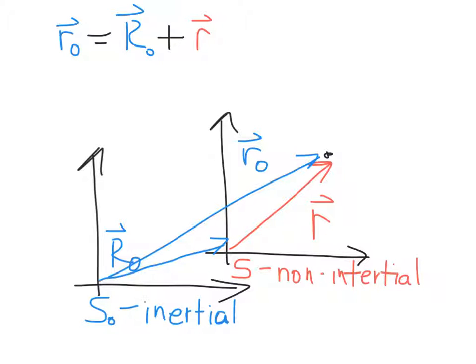Now this equation represents the way in which we basically solve these problems and how we convert from an inertial coordinate system to a non-inertial coordinate system. Let's take two time derivatives of both sides of this equation. And what we'll get is that r0 double dot is equal to big R0 double dot plus little r double dot.